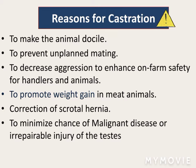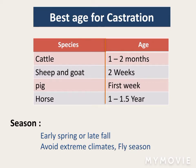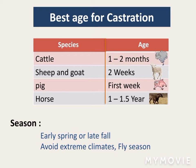Other reasons include: to decrease aggression, to ensure safety of farm employees, to promote weight gain, for correction of scrotal hernia, and to minimize the chance of malignant disease. The best age for castration for cattle is one to two months, and for sheep and goat